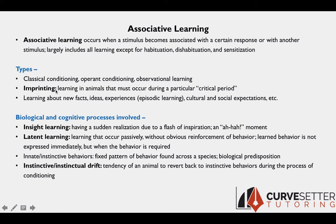During a certain critical period, imprinting occurs, causing animals to associate their mother with the figure to follow around. If they miss that critical period, they wouldn't be able to perform that behavior. Associative learning also includes general school learning — facts, ideas, new experiences — called episodic learning — as well as learning cultural and social expectations, language, and so on.